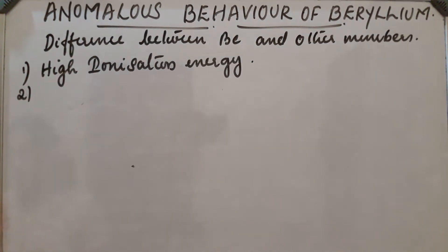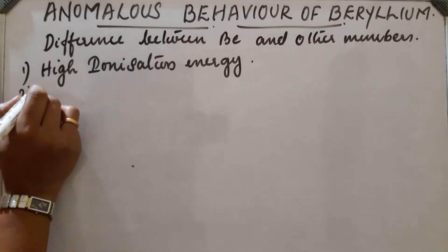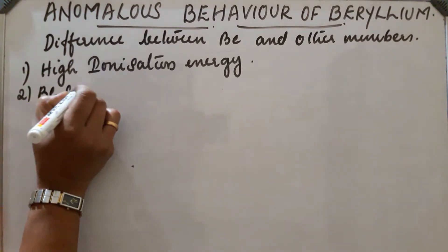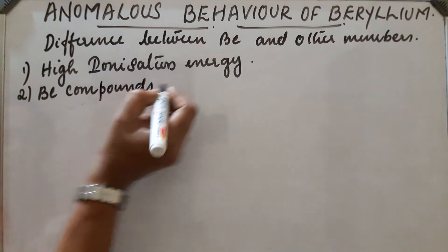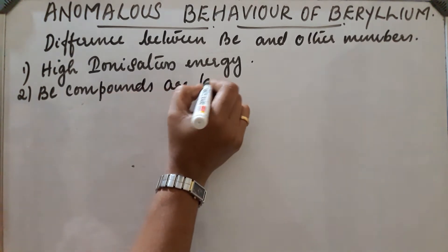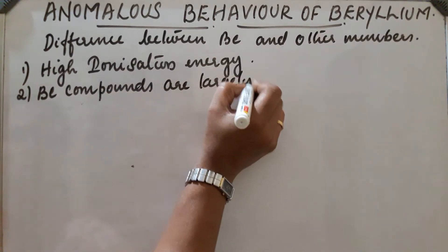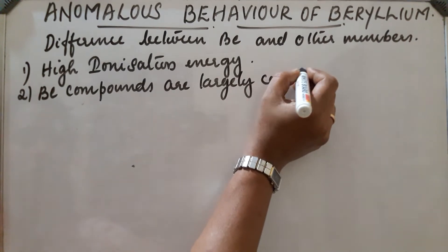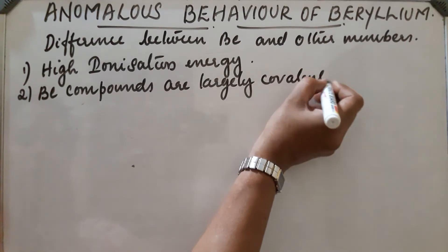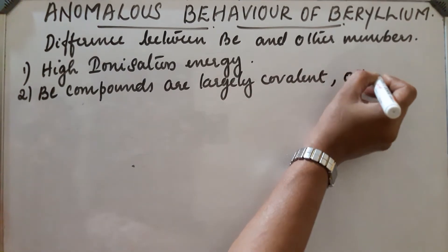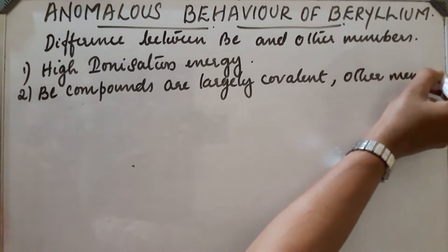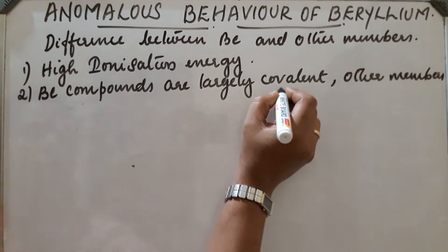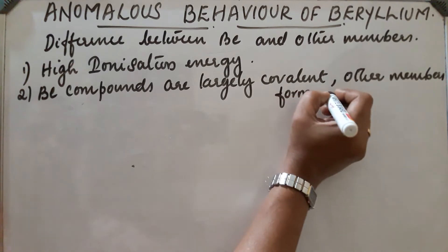Next, due to its small size, beryllium compounds are largely covalent, whereas other members form ionic compounds.